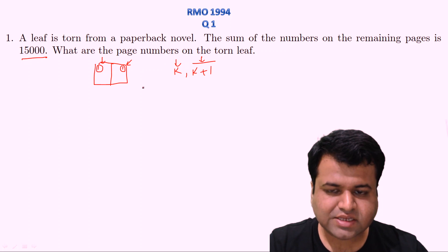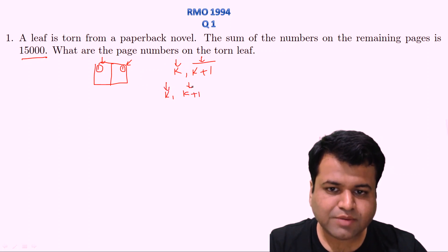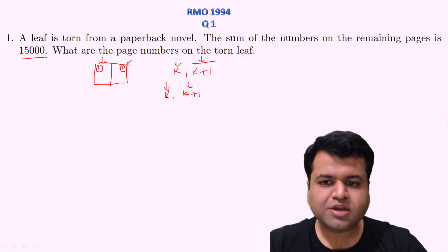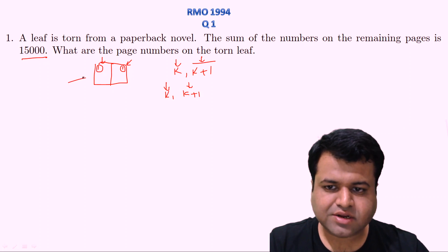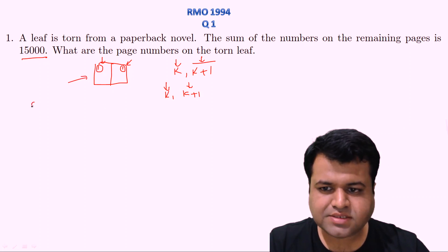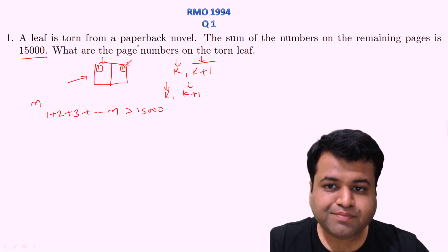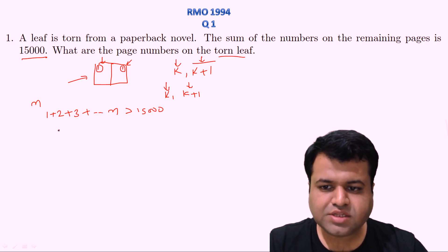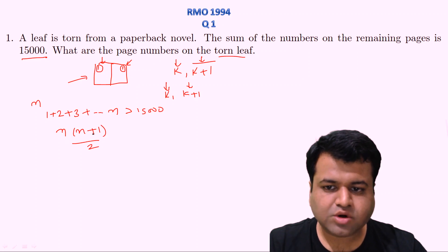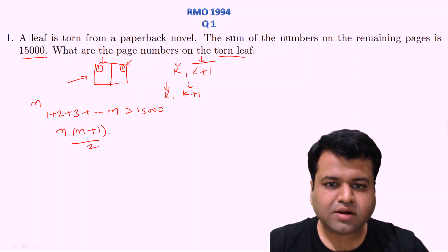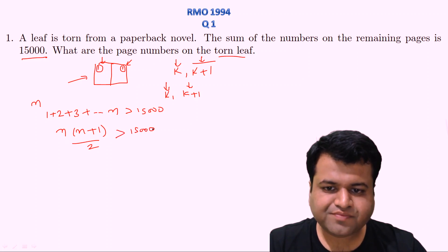If the numbering is done the other way, tearing a leaf gives K and K+1 where K is even and K+1 is odd. So it entirely depends how the numbering is done. Let's consider both cases. Assume there are n pages. The sum of all pages is 1 + 2 + 3 + ... + n = n(n+1)/2, which is greater than 15,000. So n(n+1) must be greater than 30,000.